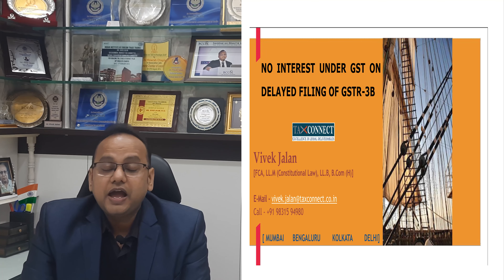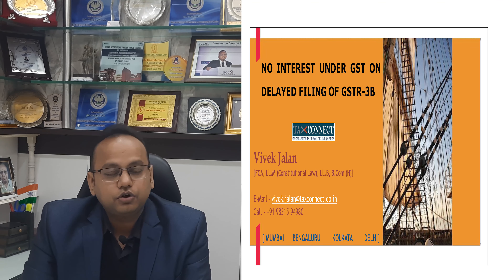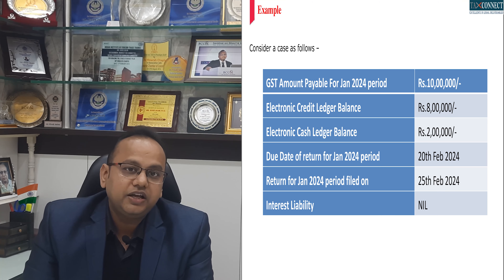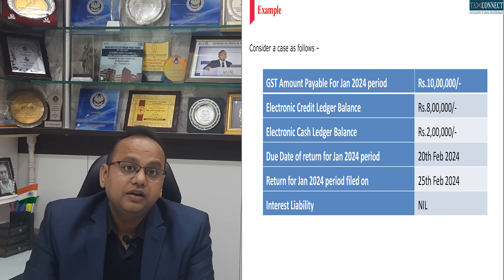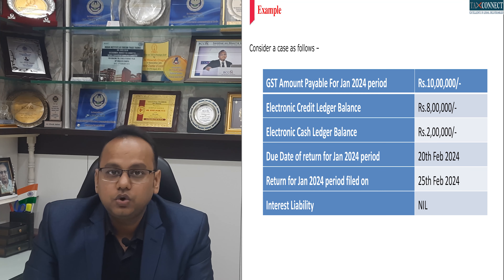Good afternoon friends. The big question under GST on which a lot of litigations are there is whether GST interest is applicable on delayed filing of the GSTR 3B return, in case the ITC and the cash is available in the electronic credit or cash ledgers on the GST portal. Consider a case where for the month of January 2024, you have to file the GSTR 3B return on 20th of February 2024.